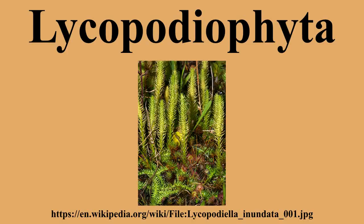They are distinguished by the microphylls and by transverse dehiscence of the sporangia. Sporangia of living species are borne on the upper surfaces of microphylls. In some groups, these sporophylls are clustered into strobili.